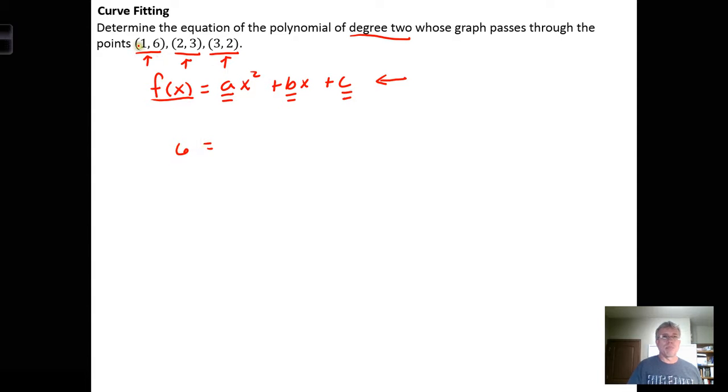Replace the function output with 6, then plug 1 in everywhere we see an x. We get 1² = 1 times a is just a, plus 1 times b is just b, plus the constant term. So a + b + c = 6.